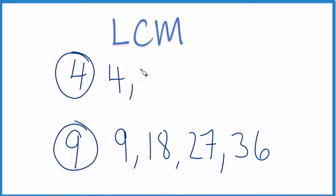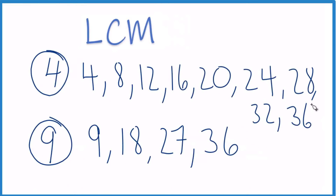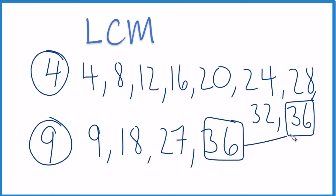Now I can write the multiples of 4: 4, 4 plus 4 is 8, 8 plus 4 is 12. And if we keep going — there it is — 36. That's the common multiple between 4 and 9. It's the first one we found, so it's the least common multiple between 4 and 9.